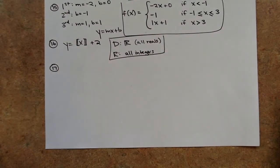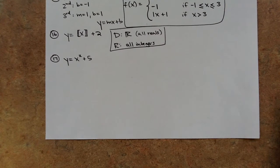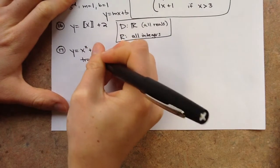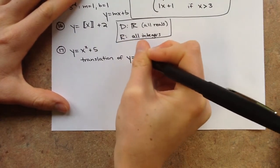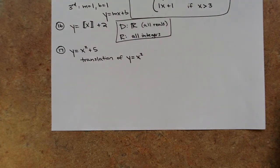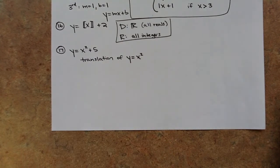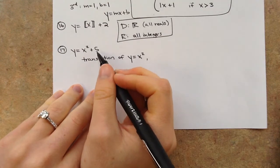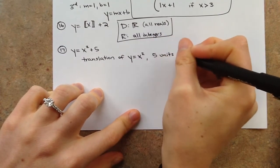Number 17: describe the transformation for y equals x squared plus 5. This is a translation of y equals x squared — the parent function. A number on the outside means up or down, and plus 5 means it goes up 5 units. On the test, you'll need to identify whether it's a translation, reflection, or dilation, and graph it: move the vertex up 5 units, then draw the parabola from there.